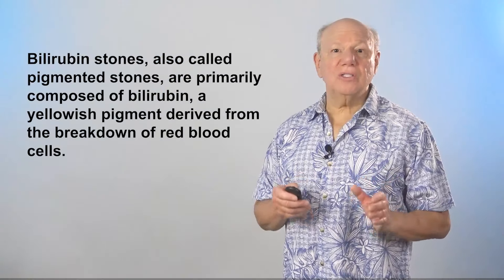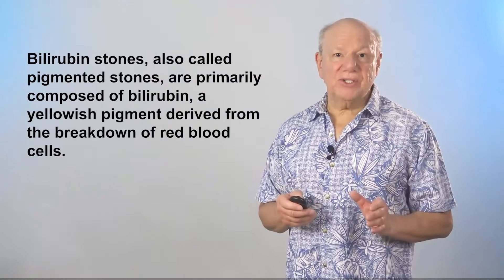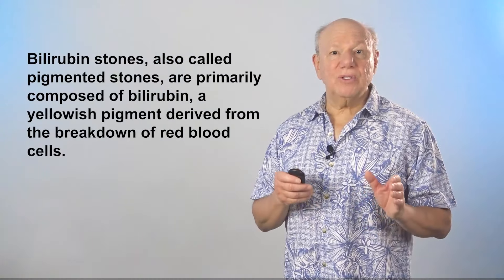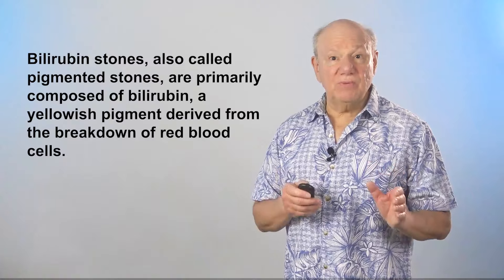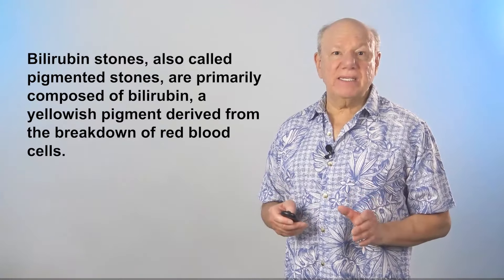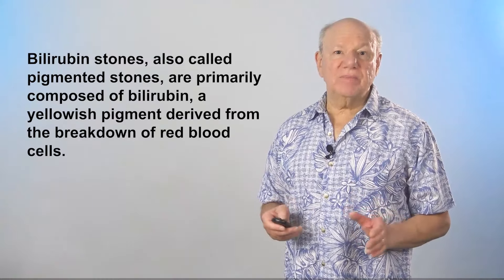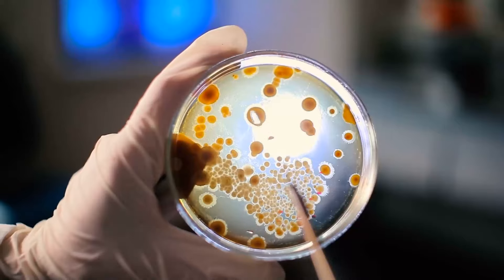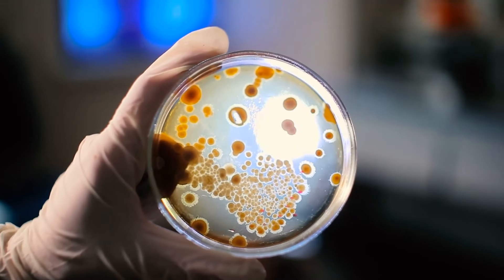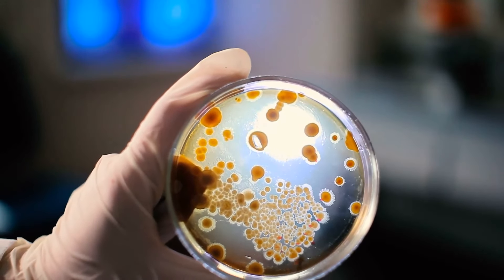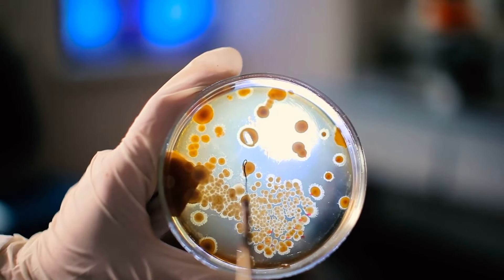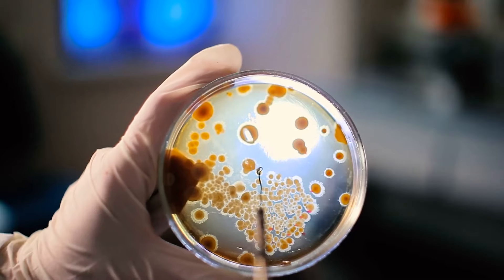Bilirubin stones, also called pigmented stones, are primarily composed of bilirubin, a yellowish pigment derived from the breakdown of red blood cells. These stones tend to develop when there's an abundance of bilirubin in the bile, often due to the action of bacteria.